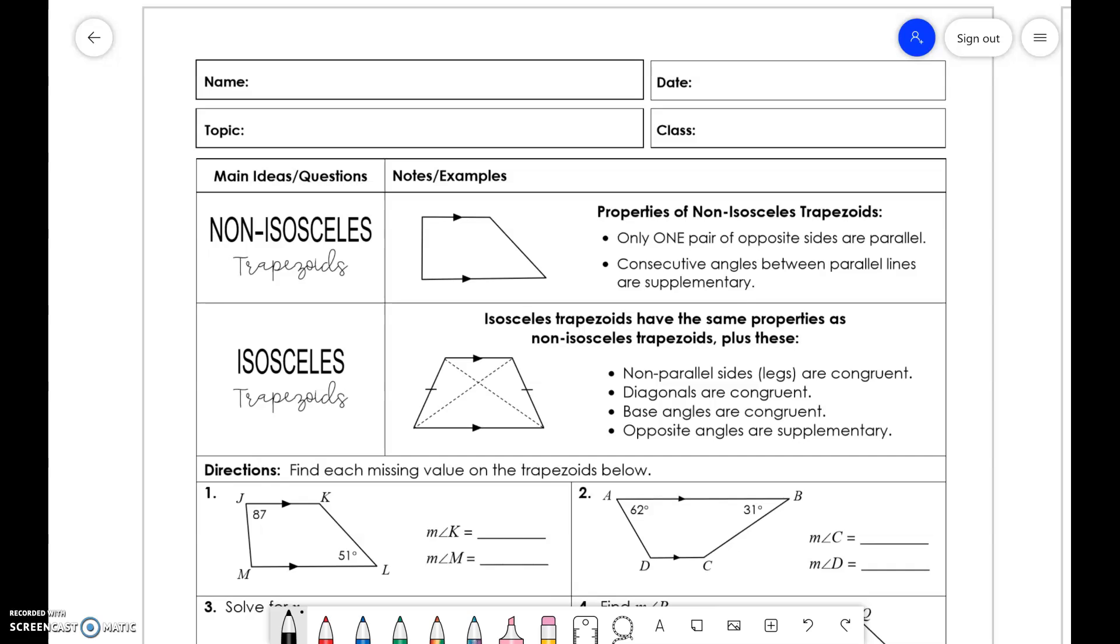So, we have two types of trapezoids, non-isosceles and isosceles trapezoids. Non-isosceles trapezoids only have one pair of opposite sides that are parallel, and consecutive angles between the parallel lines are supplementary. We know those are consecutive interior angles, which are 180 as well.